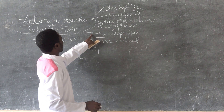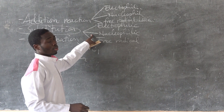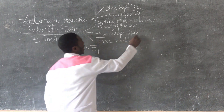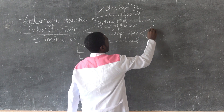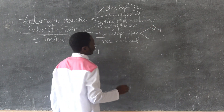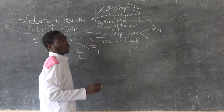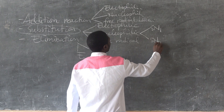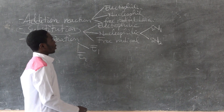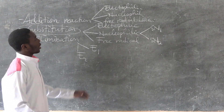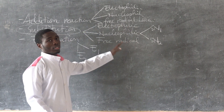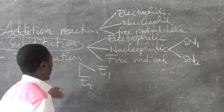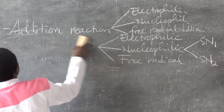Just for nucleophilic substitution alone, it has two types: SN1, nucleophilic substitution unimolecular, and SN2, nucleophilic substitution bimolecular. We are going to explain all of these when we arrive at that stage. Now we are going to start proper.